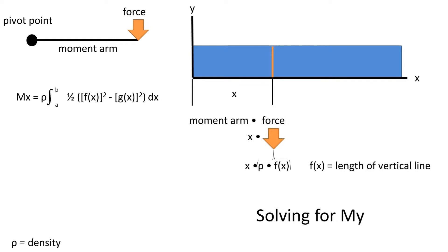So the formula for the moment about the y-axis at this point is x times the density times the length of the line at a given point on the x-axis, which is the function f(x).